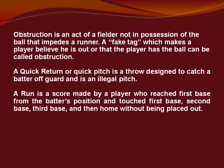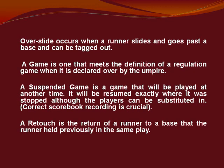A run is a score made by a player who reaches first base from the batter's position, and touches first base, second base, third base, and then home without being put out. An overslide occurs when a runner slides and goes past a base and can be tagged out. A regulation game is one that meets the definition of a regulation game when it is declared over by the umpire. A suspended game is a game that will be played at another time; it will be resumed exactly where it stopped, although players can be substituted in.